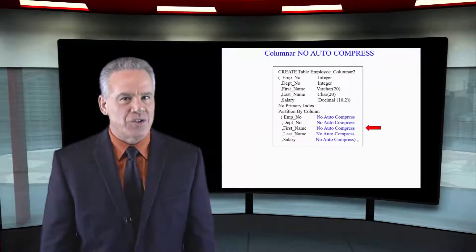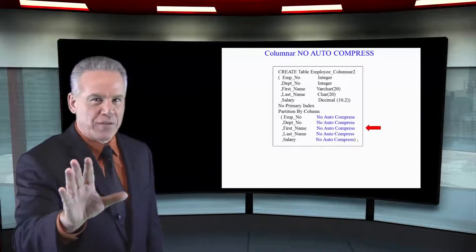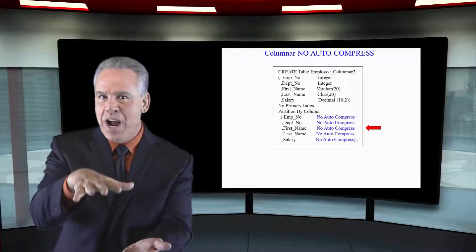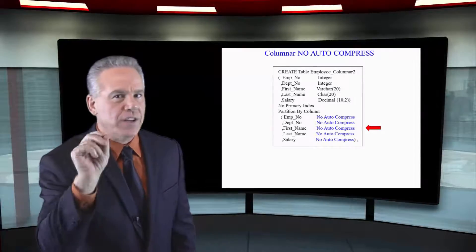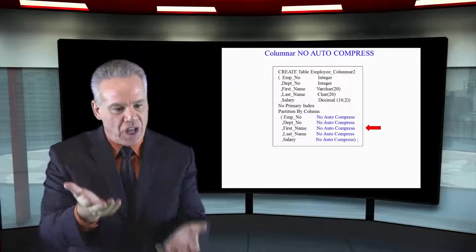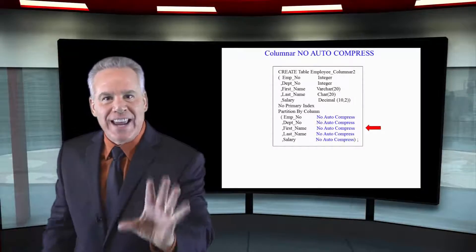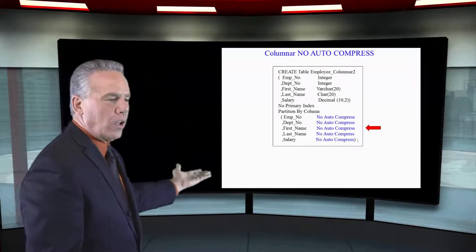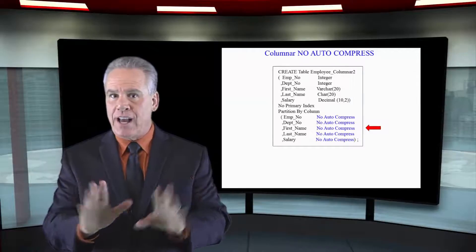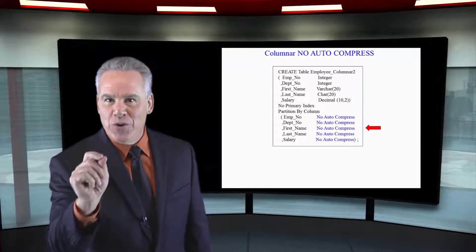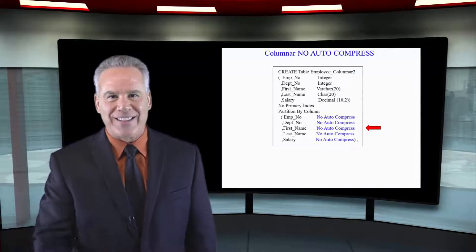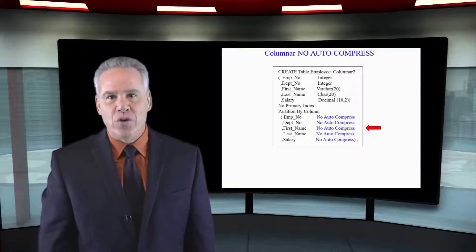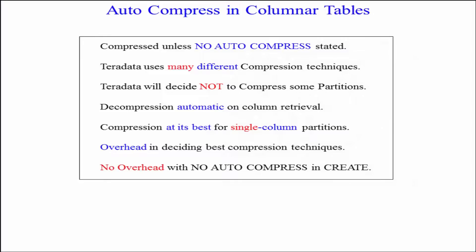One of the great things about a columnar design is it compresses data like nothing you've ever seen. Tables are much smaller based on a wide variety of compression algorithms that Teradata decides on the fly, based on the data it's seeing. Note that I've specified no auto compress on all columns because compression takes time. If you don't say no auto compress, it will do auto compression; if you do say it, it will not.